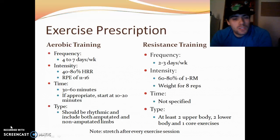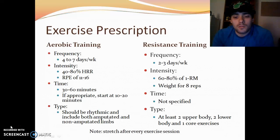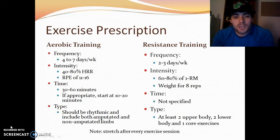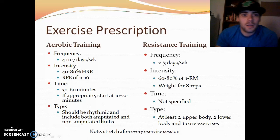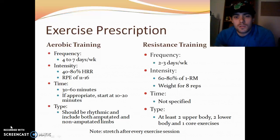For an exercise prescription — which was hard to find, as there wasn't really anything in the ACSM guidelines 9th edition — information from earlier editions suggests aerobic exercise should be about 150 minutes a week of moderate activity. For aerobic training: frequency is about 4 to 7 days per week, intensity is 40 to 80% of heart rate reserve or RPE of 11 to 16, and time should be about 30 to 60 minutes.